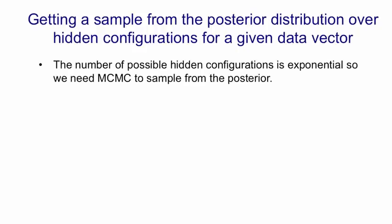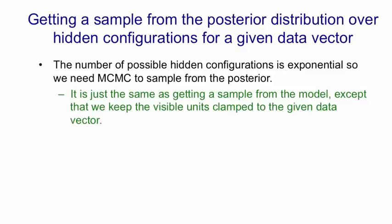So the number of possible hidden configurations is, again, exponential. So again, we use Markov chain Monte Carlo. And it's just the same as getting a sample from the model, except that we keep the visible units clamped to the data vector we're interested in. So we only update the hidden units.